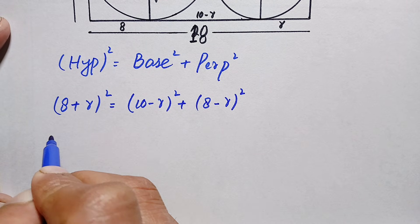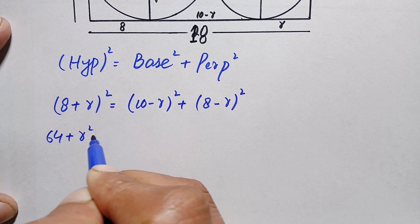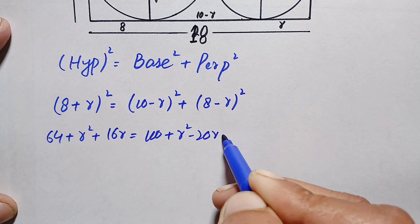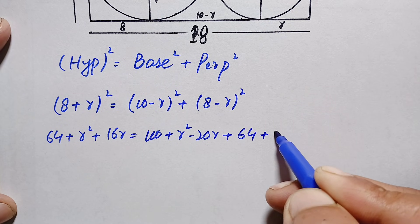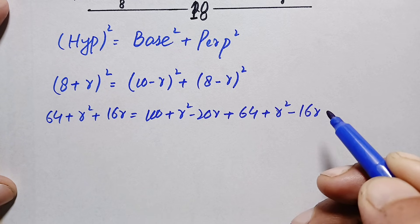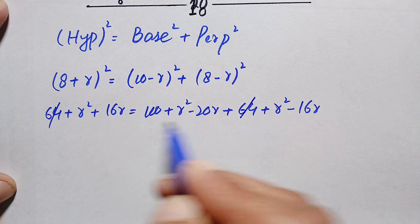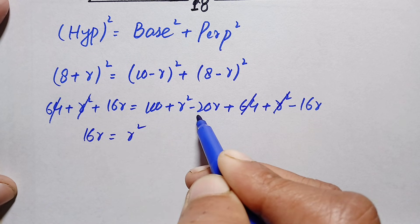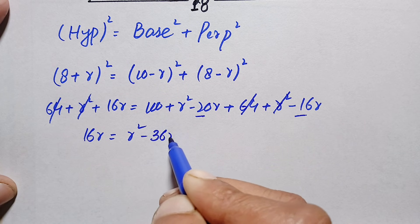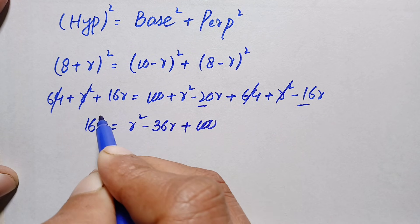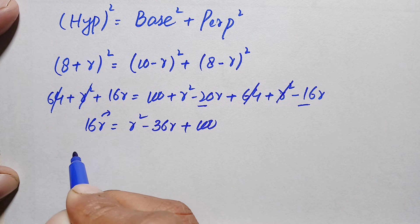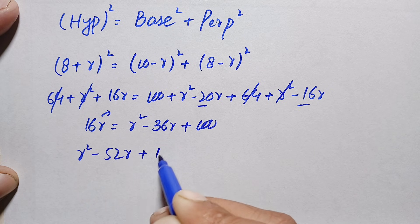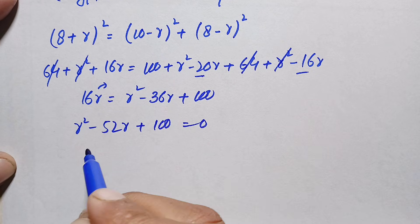Expanding both sides: the left side gives 64 plus r squared plus 16r. The right side gives 100 plus r squared minus 20r, plus 64 plus r squared minus 16r. Simplifying, 16r equals r squared minus 20r minus 16r, which is minus 36r, plus 100. Bringing 16r to the right-hand side gives r squared minus 52r plus 100 equals 0. We now have a quadratic equation.